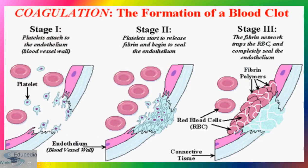Blood coagulation is a suitable target for treating diseases that involve dysregulated blood clotting or the absence of clotting. The formation of a blood clot involves three stages. In the first stage, platelets get attached to the endothelium blood vessel wall. These white ones are your platelets, and the others are your RBCs.